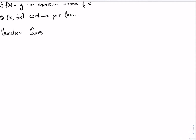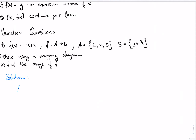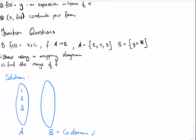For example, we have f(x) = x + 2, where F maps A to B, A is the set {1, 2, 3}, and B is the set of natural numbers. The question asks us to show the relation using a mapping diagram and find the range. The domain values 1, 2, and 3 are each mapped: 1 maps to 3 (since 1 + 2 = 3), 2 maps to 4 (since 2 + 2 = 4), and 3 maps to 5 (since 3 + 2 = 5). Those values we map to form the range of F.